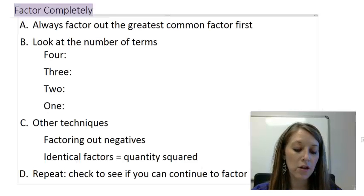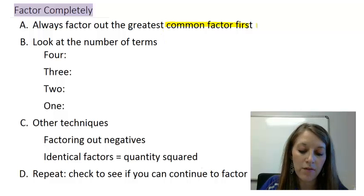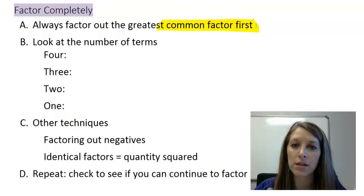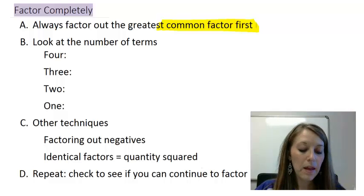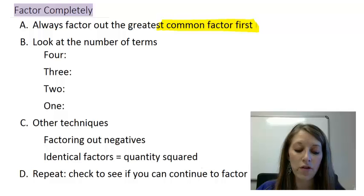The first thing that you should always look for is of course you want to pull out your common factor first. And remember that's the only technique that you end up without two sets of parentheses. So if you do it first then you won't have to worry about it in the rest of the problem. After that you should look at the number of terms because that's going to tell you what techniques to do from there.